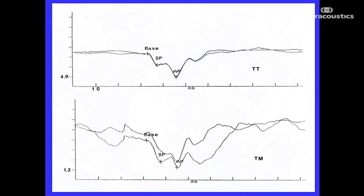Going back to recordings from the promontory and tympanic membrane of the same subject: notice the enlarged SP compared to the AP — almost a one-to-one or even two-to-one ratio. The responses from the eardrum display a large SP-AP amplitude ratio just as nicely as those from the promontory. The diagnostic feature of the electrocochleogram — telling us whether it's positive or negative for hydrops — is certainly seen at the promontory but is nicely preserved at the tympanic membrane as well.